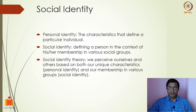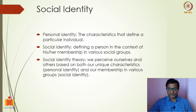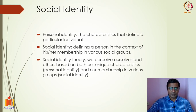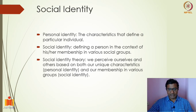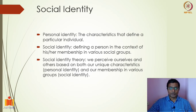When we try to understand ourselves and others, we try to understand the identity — who are they or who am I. In the previous lecture, I asked you to do an exercise where I asked you to write five sentences starting with 'I am.' The idea here is to see what constitutes your identity. In identity, we use two elements: personal identity and social identity. Personal identity uses personal characteristics. Social identity is trying to understand someone by understanding their social group.